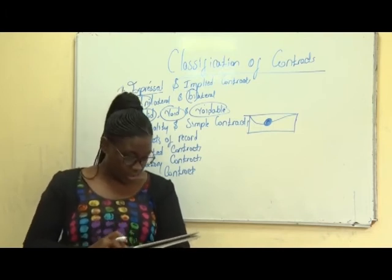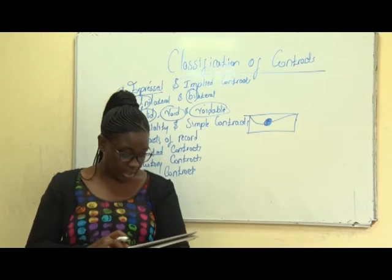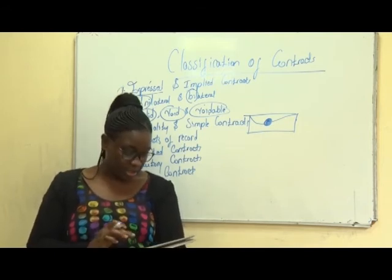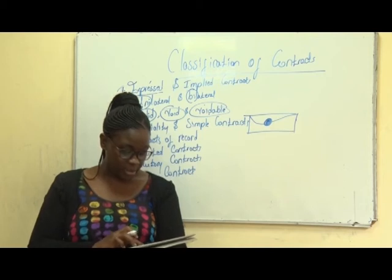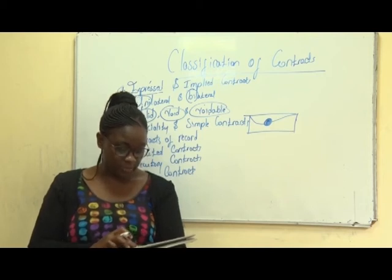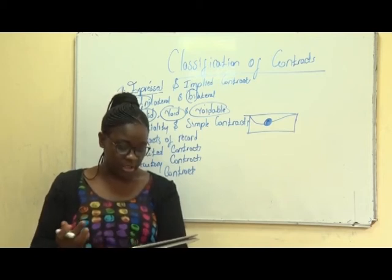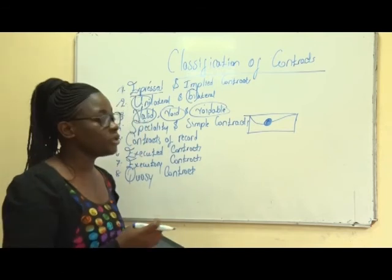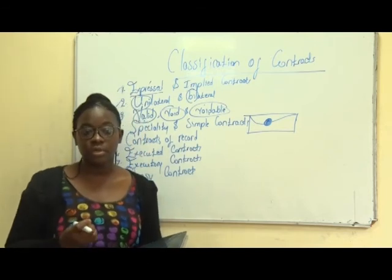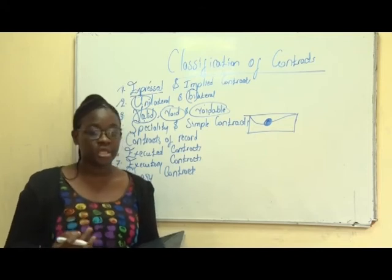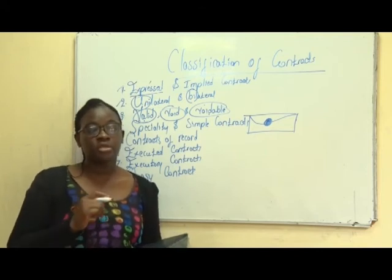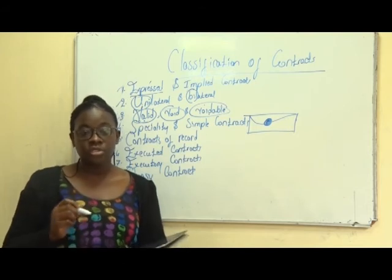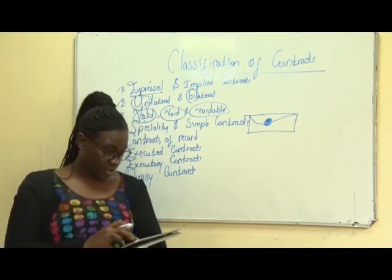Next we look at contract of record. A contract of record consists of the judgment of a court. Such contracts are formed by an entry in the court records, meaning for you to get into such a contract with someone, you have to present yourself before a judge and do all the documentation so that the records are held in the courts.